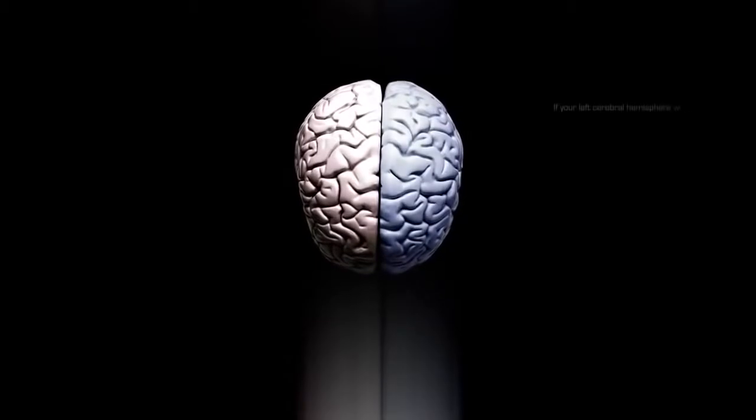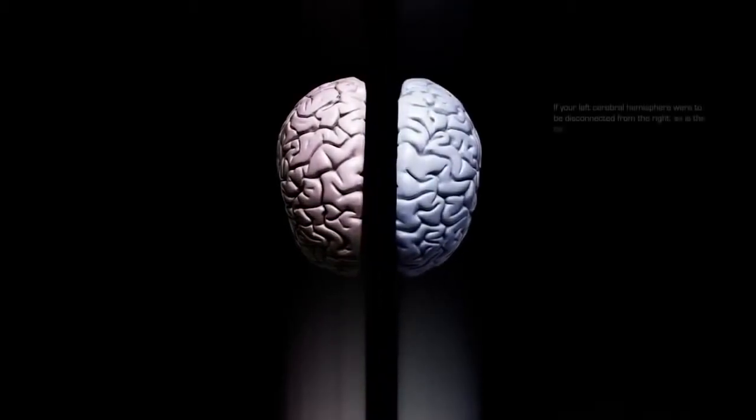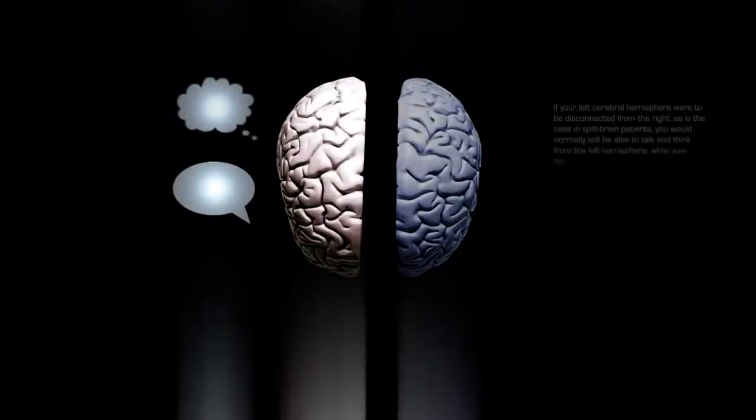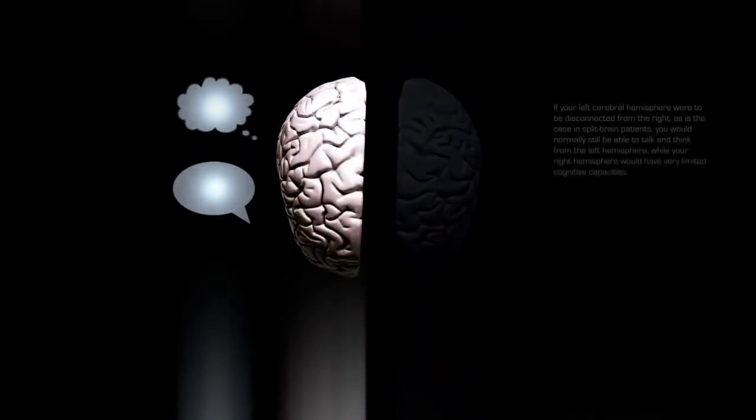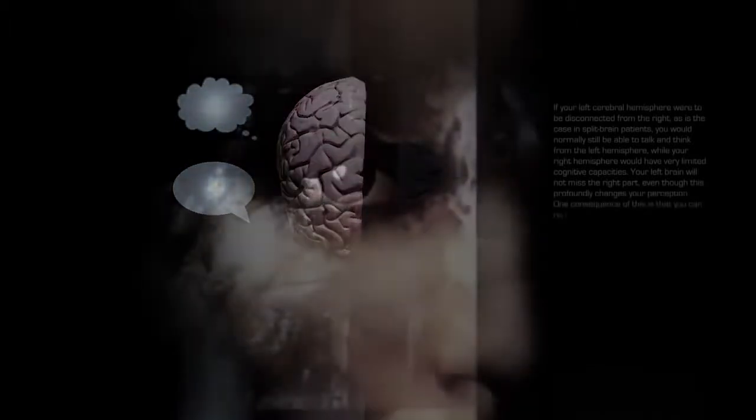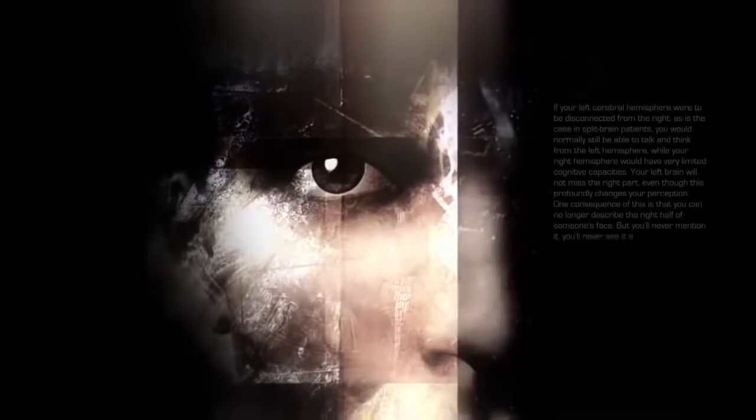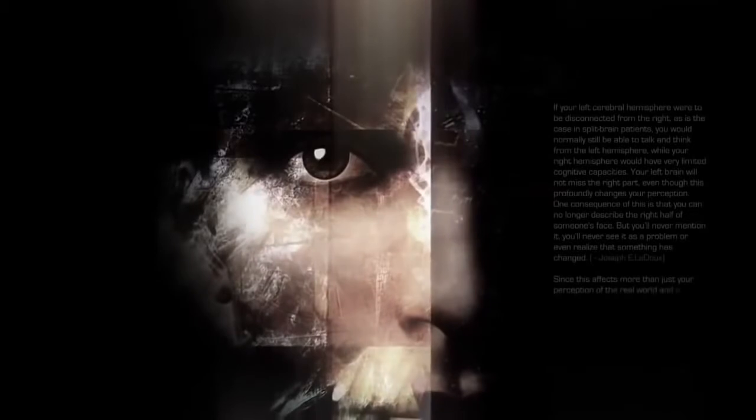If your left cerebral hemisphere were disconnected from the right, as is the case in split brain patients, you would normally still be able to talk and think from the left hemisphere. Your left brain will not miss the right part, even though this profoundly changes your perception. One consequence is that you can no longer describe the right half of someone's face, but you will never mention it. Since this affects your mental images, it is not just a sensory problem, but a fundamental change in your consciousness.